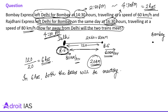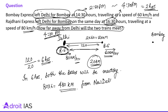In 6 hours, the distance travelled by Rajdhani Express is 80 multiplied by 6 = 480 km. So the two trains will meet 480 km from Delhi.